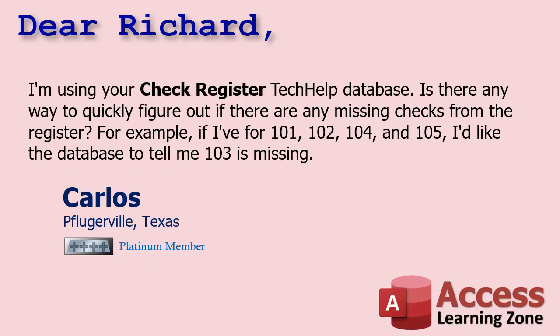Today's question comes from Carlos in Pflugerville, Texas, one of my platinum members. Carlos says: I'm using your check register template. Is there any way to quickly figure out if there are any missing checks from the register? For example, if I've got 101, 102, 104, 105, I'd like the database to tell me 103 is missing.